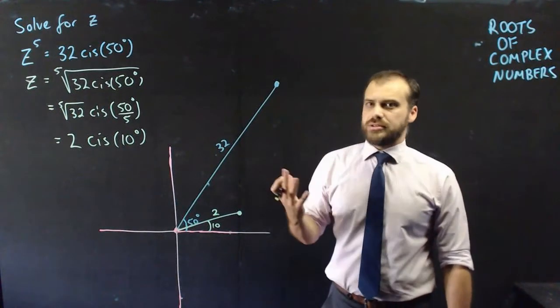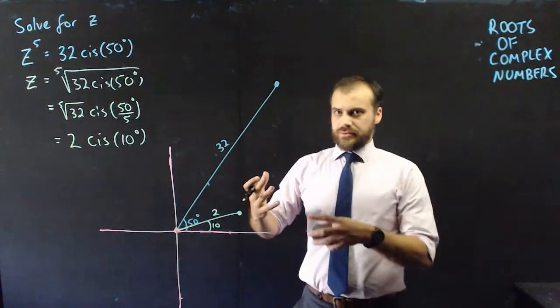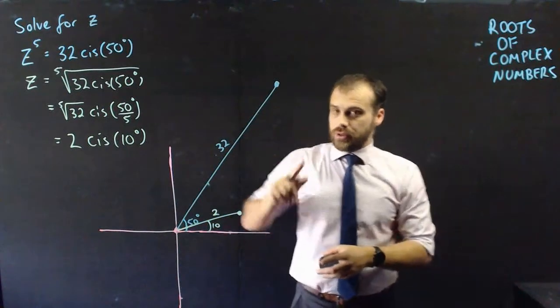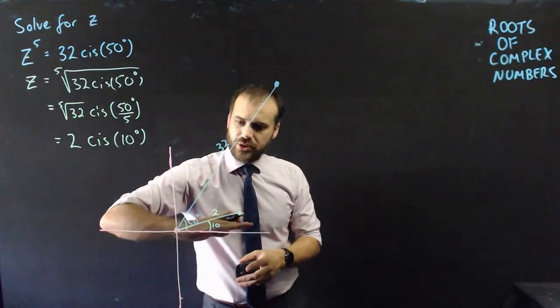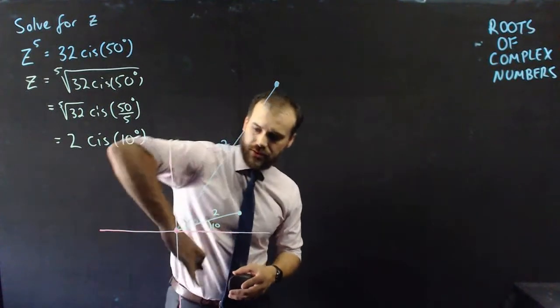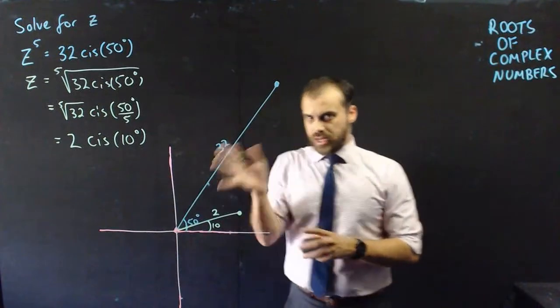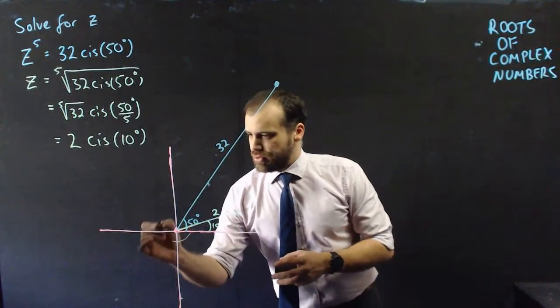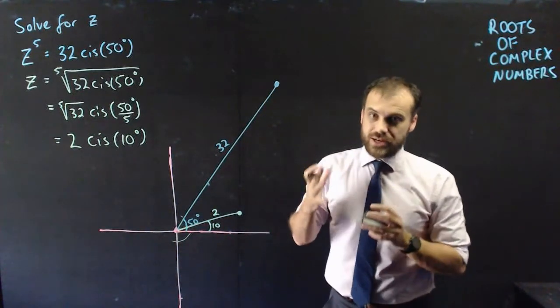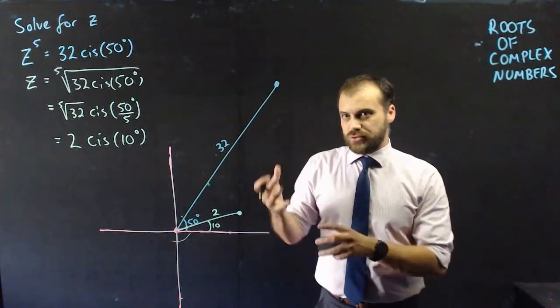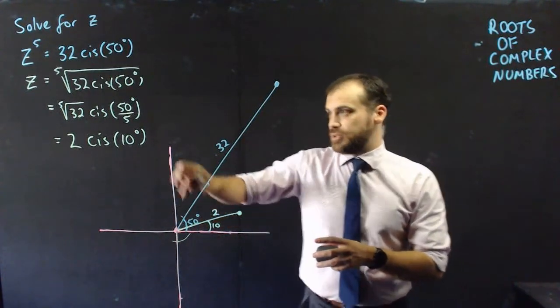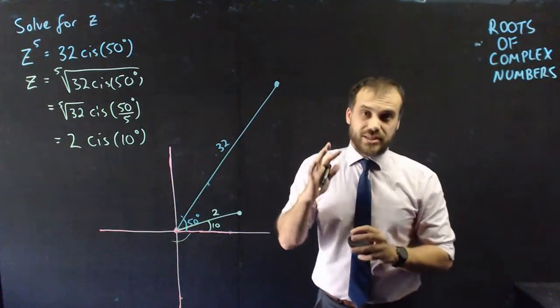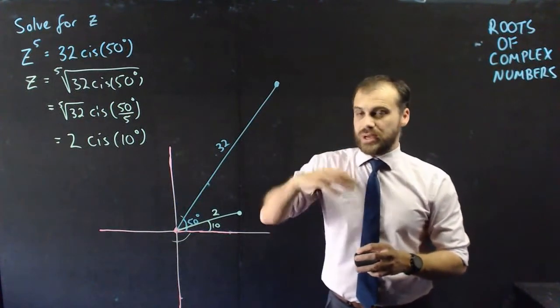What other beginning complex number could we have that when we raised it to a power of 5 would lead us here? The key here is to think of one that would rotate not that way, but instead that way. If a complex number was rotating that way, it would have to move through this angle here, which is 310 degrees. And it needs to move through that in five steps, because we're going to divide 310 by 5. 310 divided by 5 is 62.